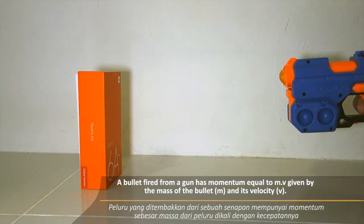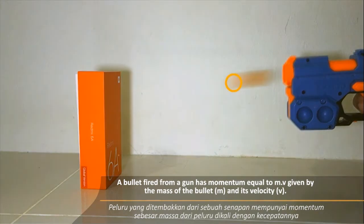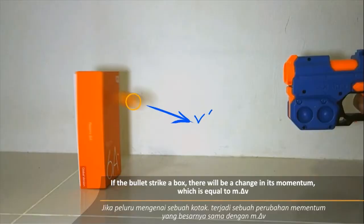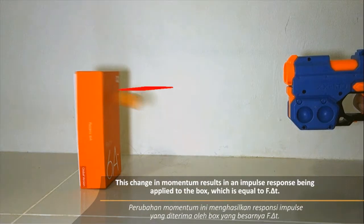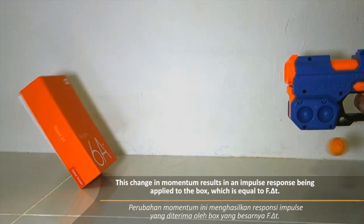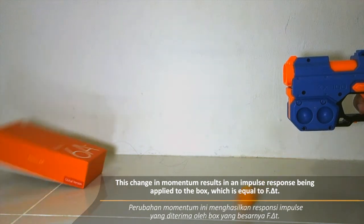A bullet fired from a gun has momentum equal to mv given by the mass of the bullet m and its velocity v. If the bullet strikes a box, there will be a change in momentum which is equal to m times delta v. This change in momentum results in an impulse response being applied to the box, which is equal to f times delta t.